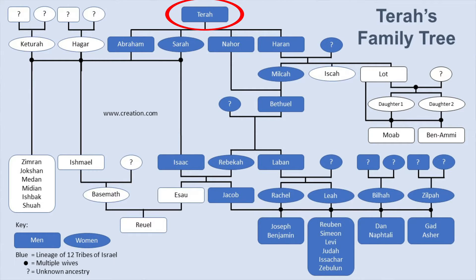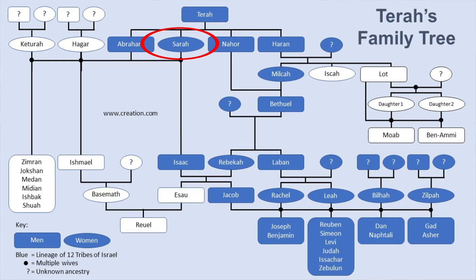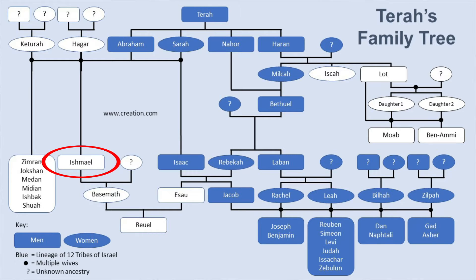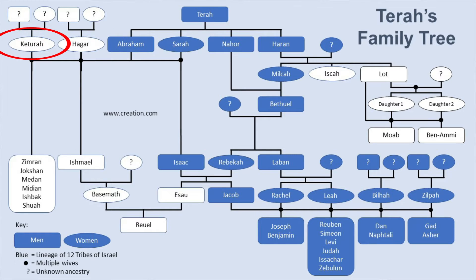Let's start with Terah, because from Terah we have a family tree that branches out to four children who all come back together for the 12 tribes of Israel. Terah is Abraham's father, but he's also the father of Abraham's wife Sarah — though they have different mothers, so they are half-brother and half-sister. They marry and have a child named Isaac. Abraham also has Ishmael through his Egyptian servant Hagar, and after Sarah dies he has sons with a woman named Keturah.